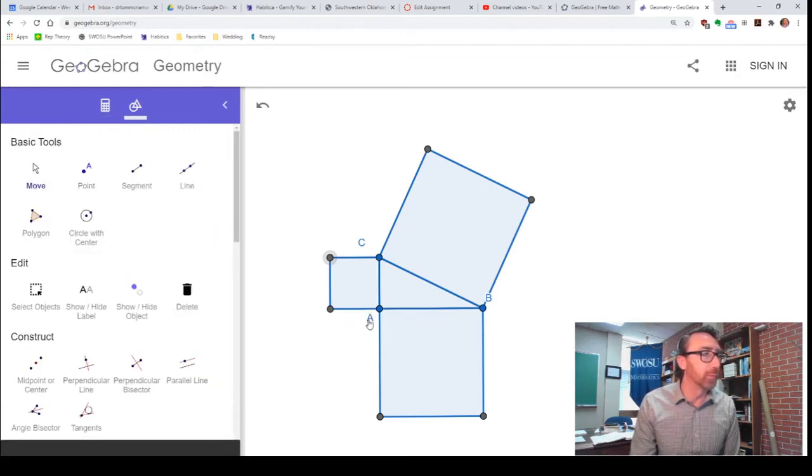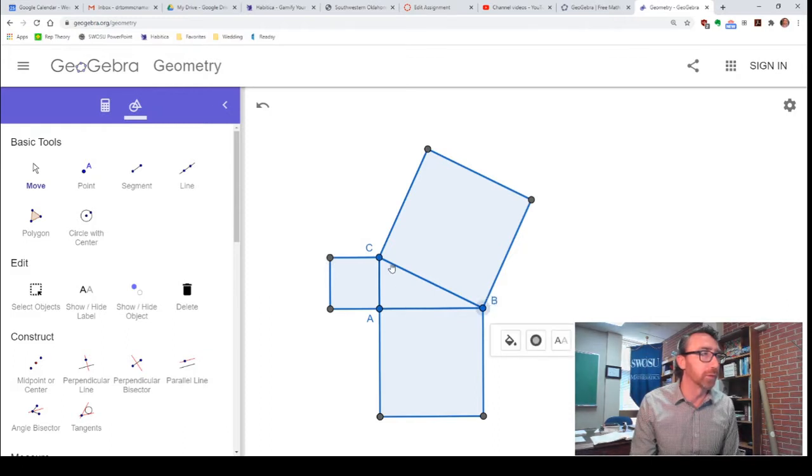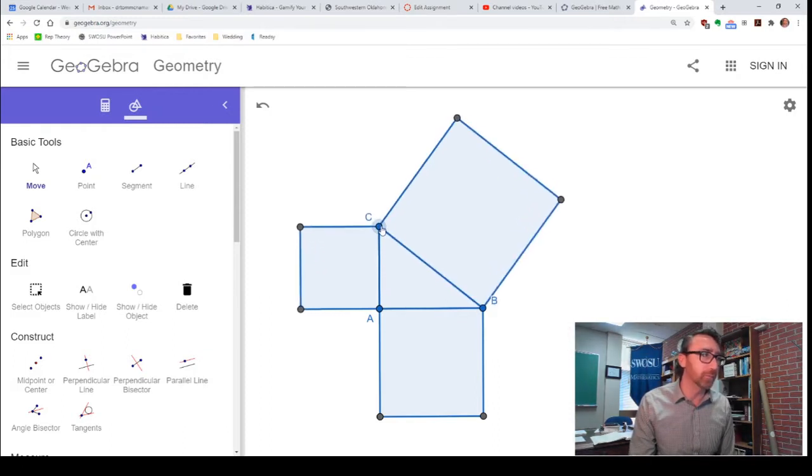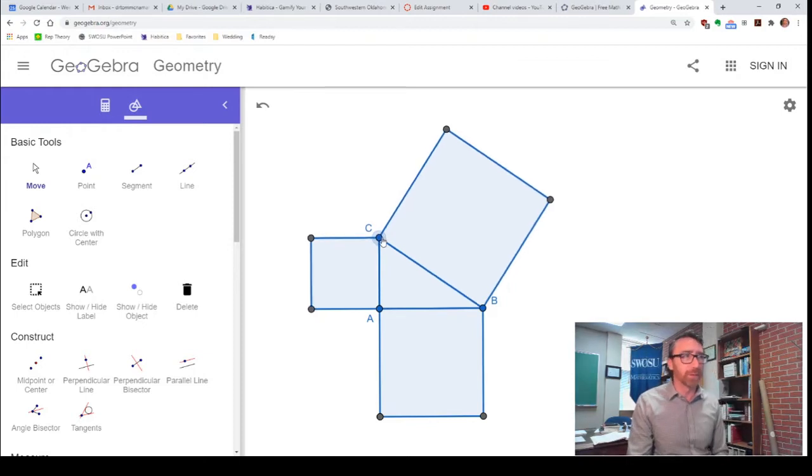In fact, there was probably a quicker way to do this. I could have just gone into the algebra window and just made those new points all go away. Anyway, now I've got my picture looking the way I want it to. And remember, you can move your labels around, too.